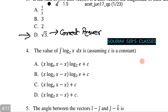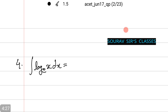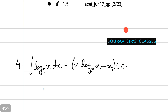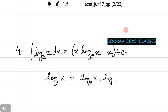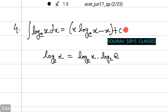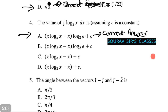The next question is the value of the integration of log base 2 of x dx, assuming c is a constant. The integration of log base e of x dx equals x log_e(x) minus x plus c. Since the question uses log base 2, we convert: log base 2 of x equals log_e(x) divided by log_e(2). Hence the result follows, and option a is the correct answer.